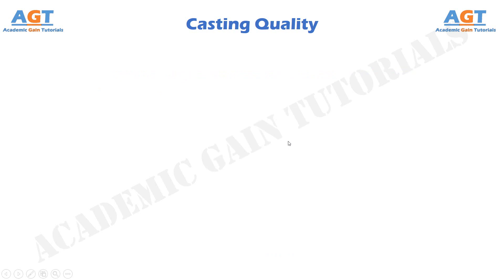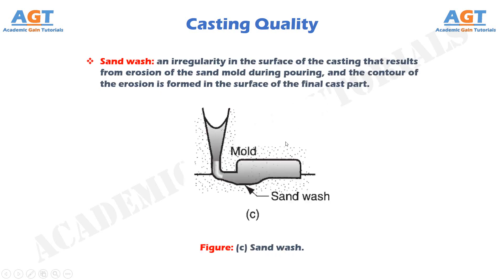Sand wash are an irregularity in the surface of the casting that results from erosion of the sand mold during pouring, and the contour of the erosion is formed in the surface of the final cast part.